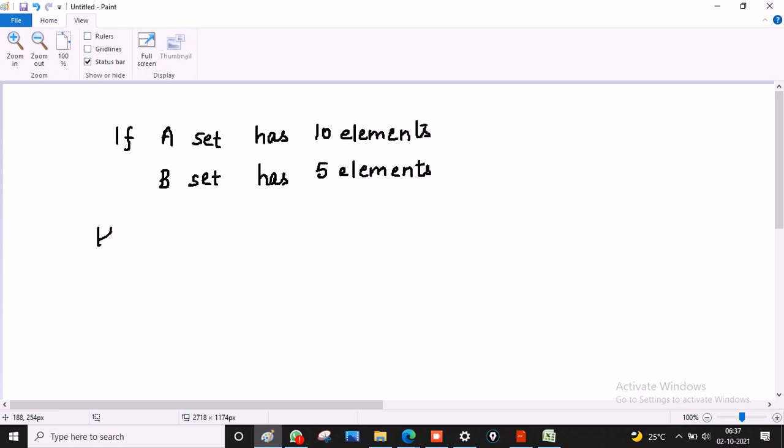Then how many subsets of A cross B will be formed?